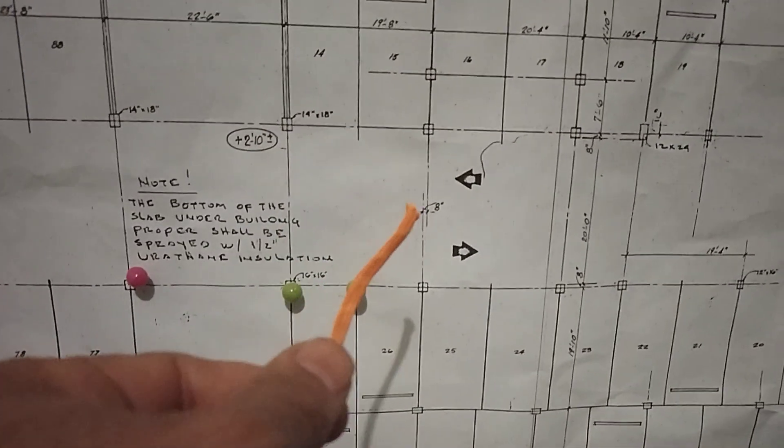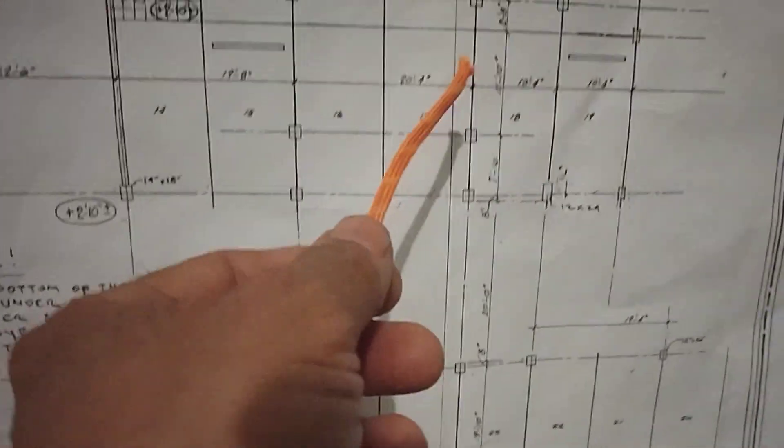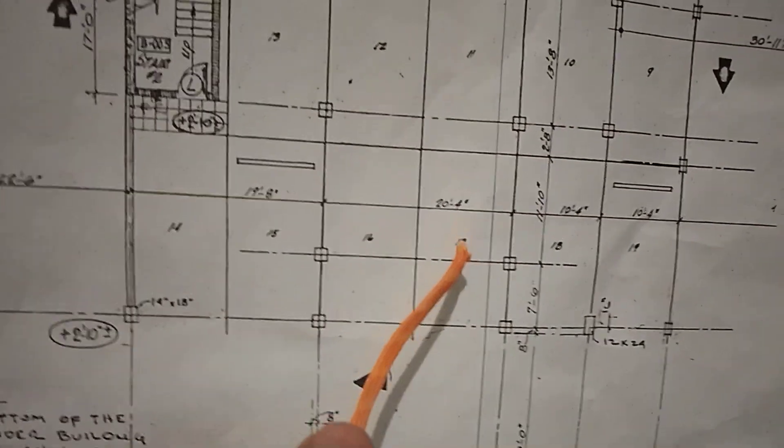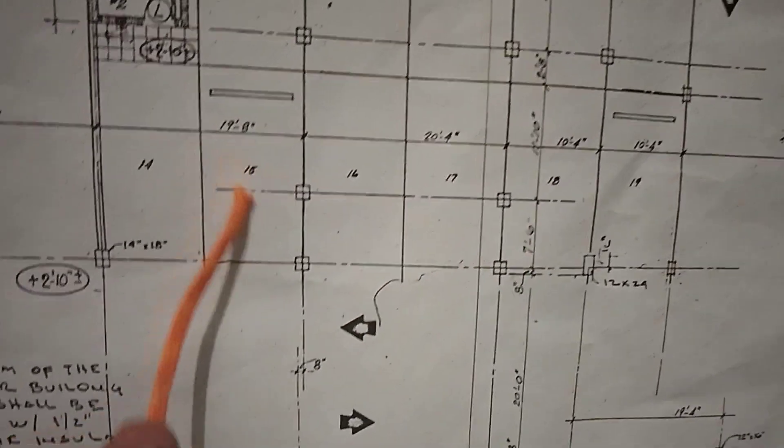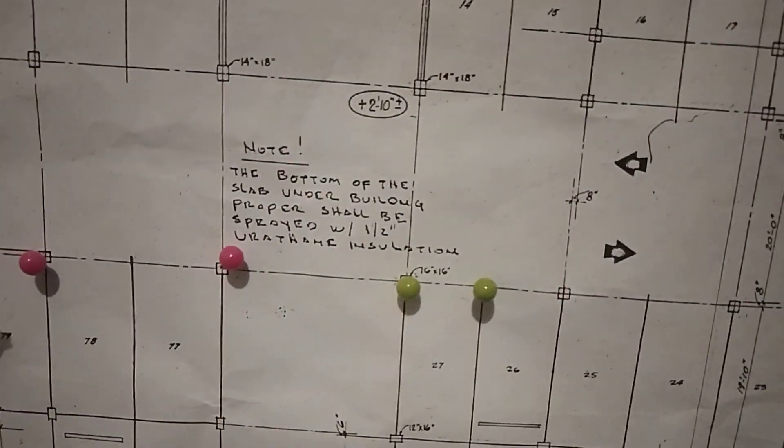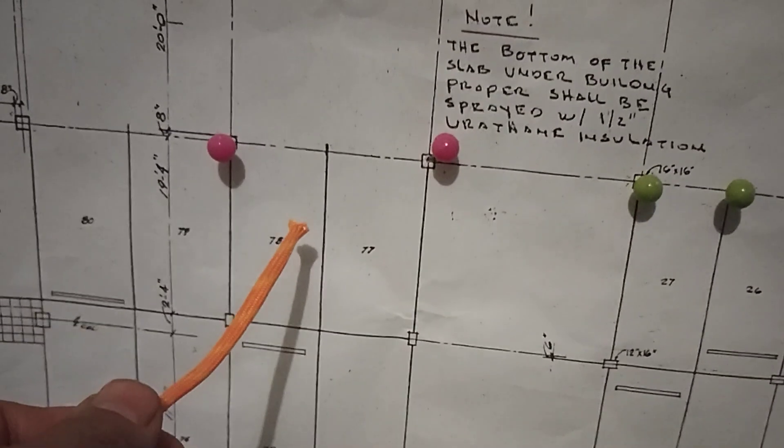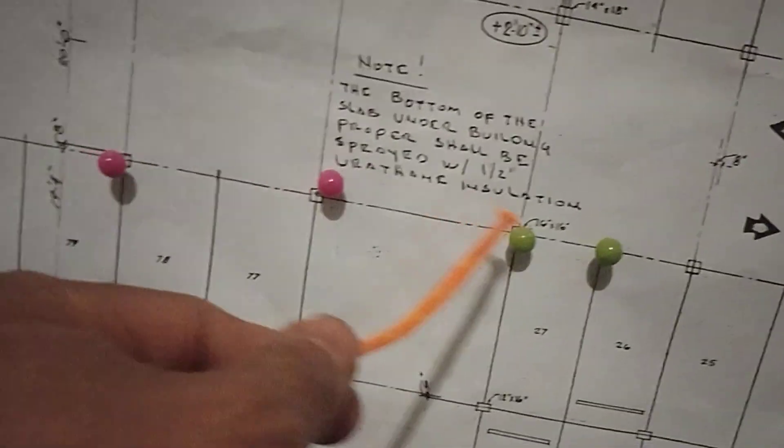Let me look at something here. There's the parking spot, this is the garage. Double column, double column. So then now we have, this is the front of the building.